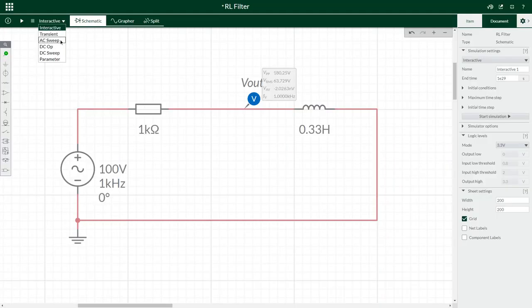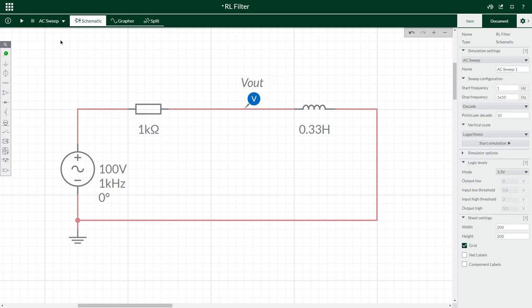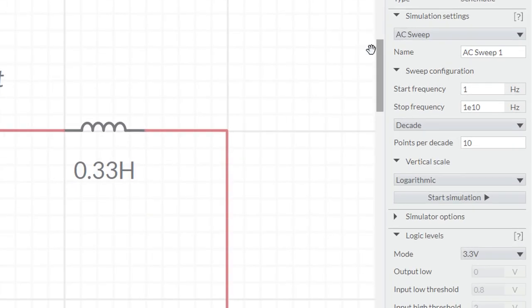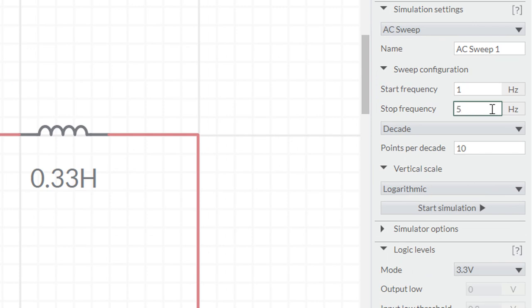So I'm going to choose the AC sweep simulation type and this sweeps the frequency through a range of frequencies. Set the x-axis by changing the stop frequency to a reasonable value based on your cutoff.